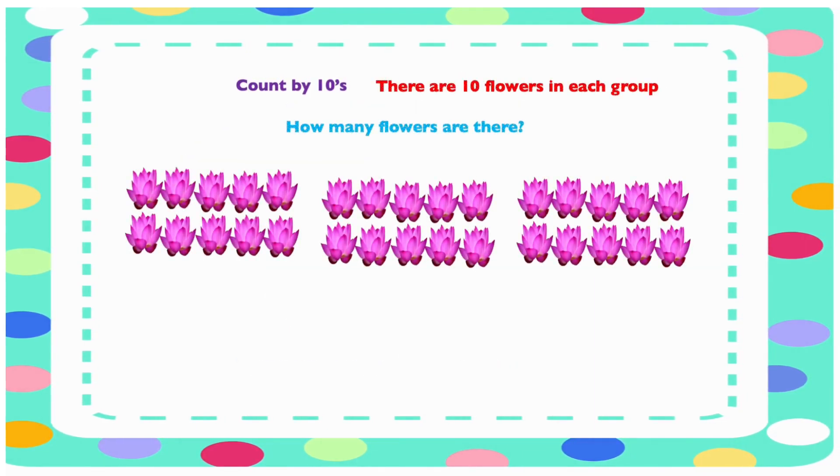There are 10 flowers in each group here. How many do we have all together? Let's count them and find out how many. Remember we are counting in tens. 10, 20, 30. So we have 30 flowers all together.